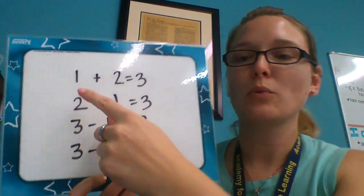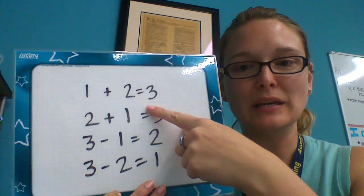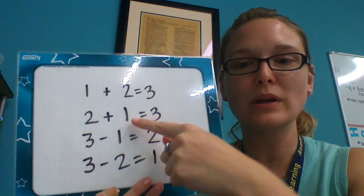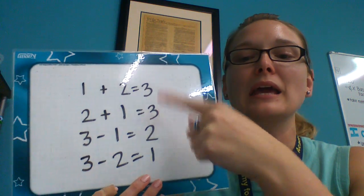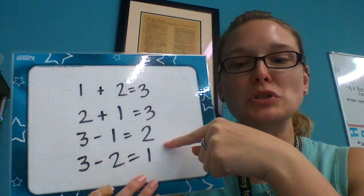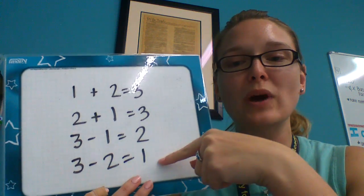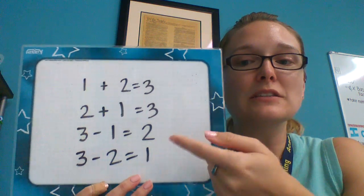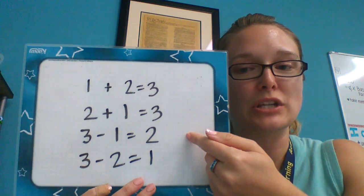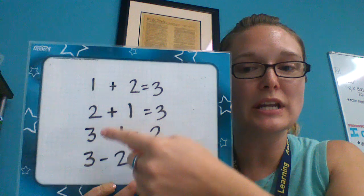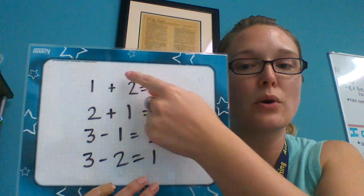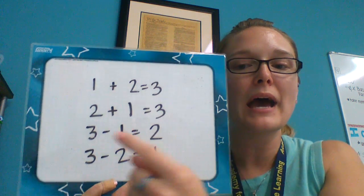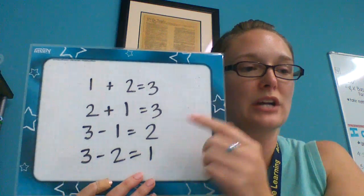Let's look first at addition and subtraction. 1 plus 2 equals 3 is the same as 2 plus 1 equals 3, and we can do 3 minus 1 equals 2, and 3 minus 2 equals 1. We call all of this a fact family. This is a fact family for addition and subtraction. Notice the opposite of addition is subtraction. So if I know the parts in the addition problem, I can figure out the parts in the subtraction problem.